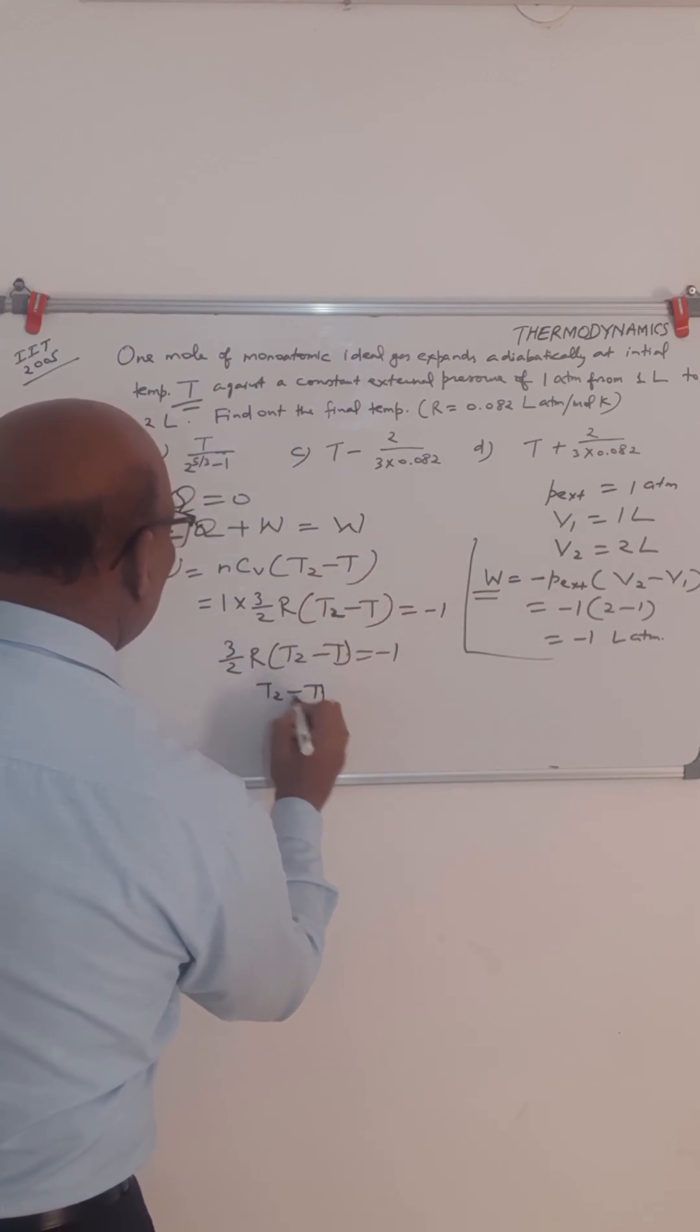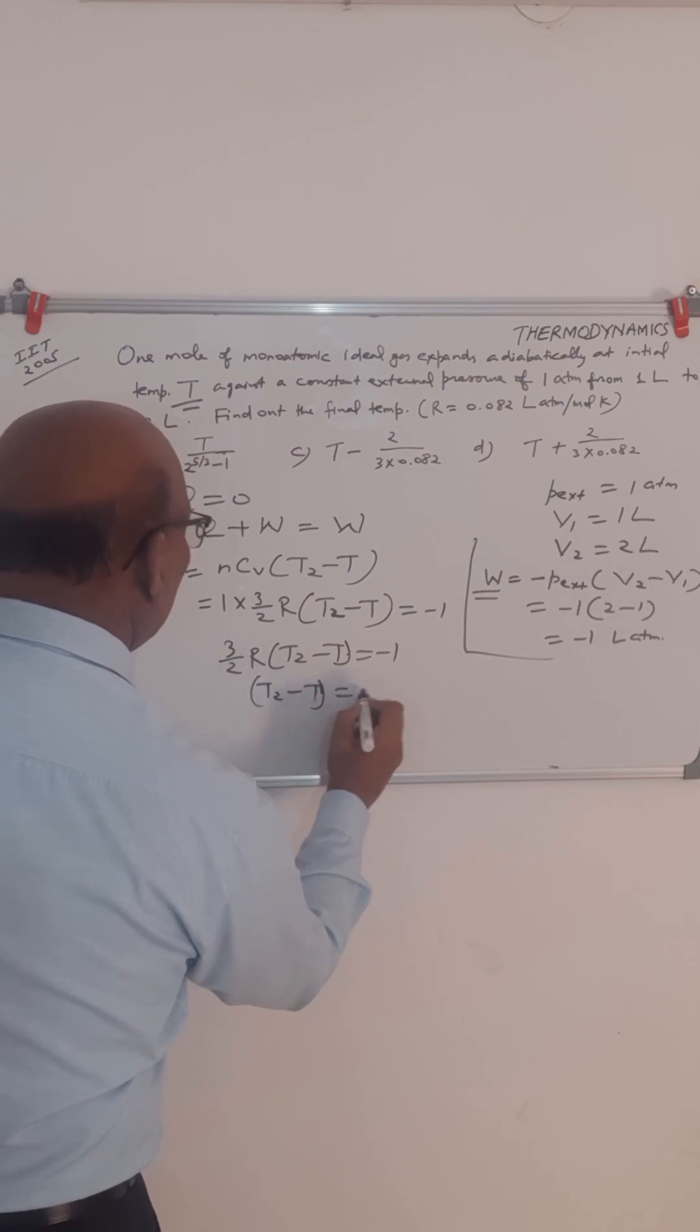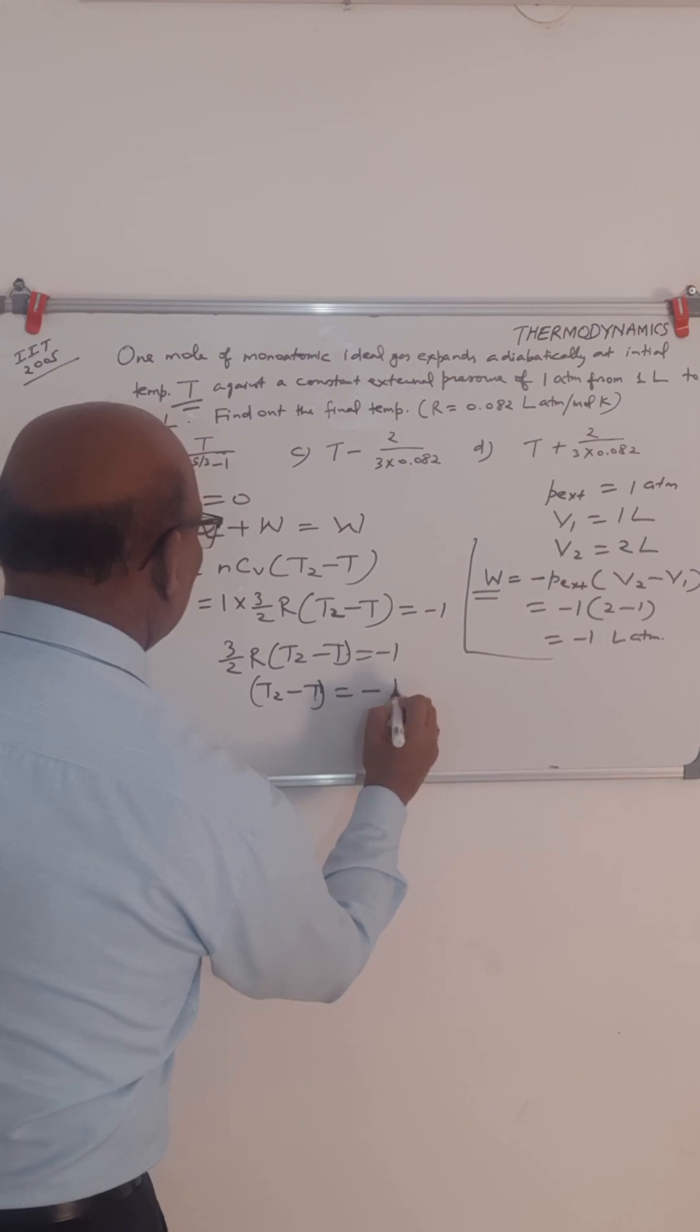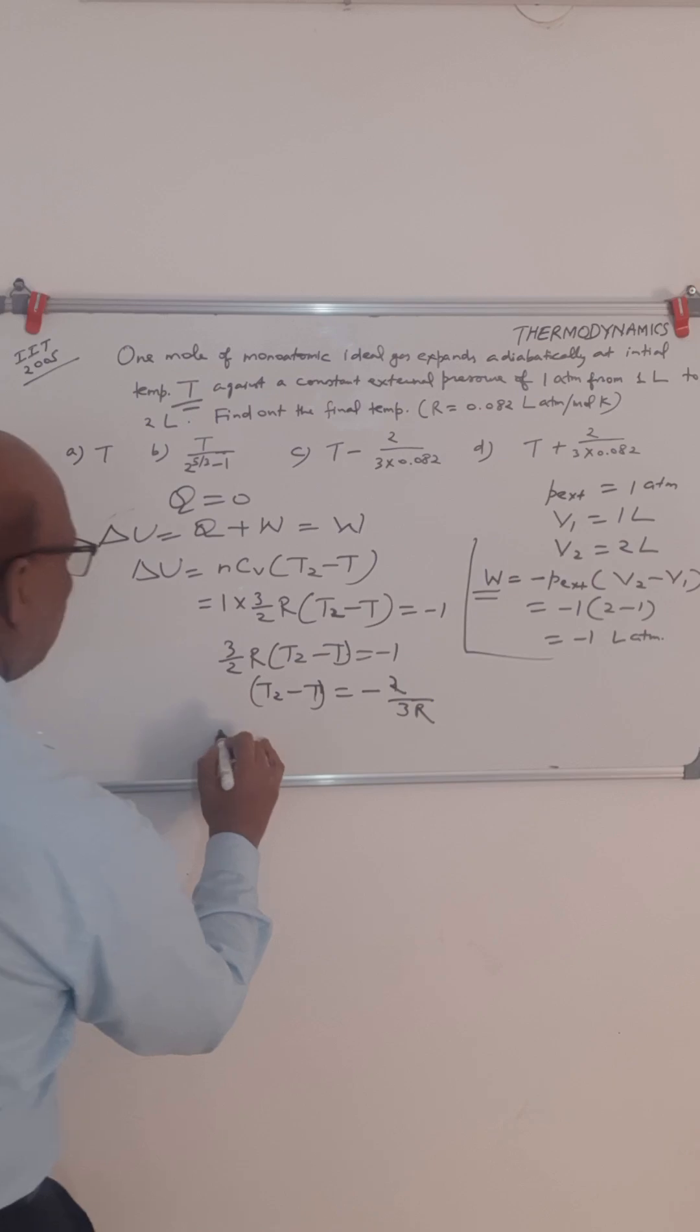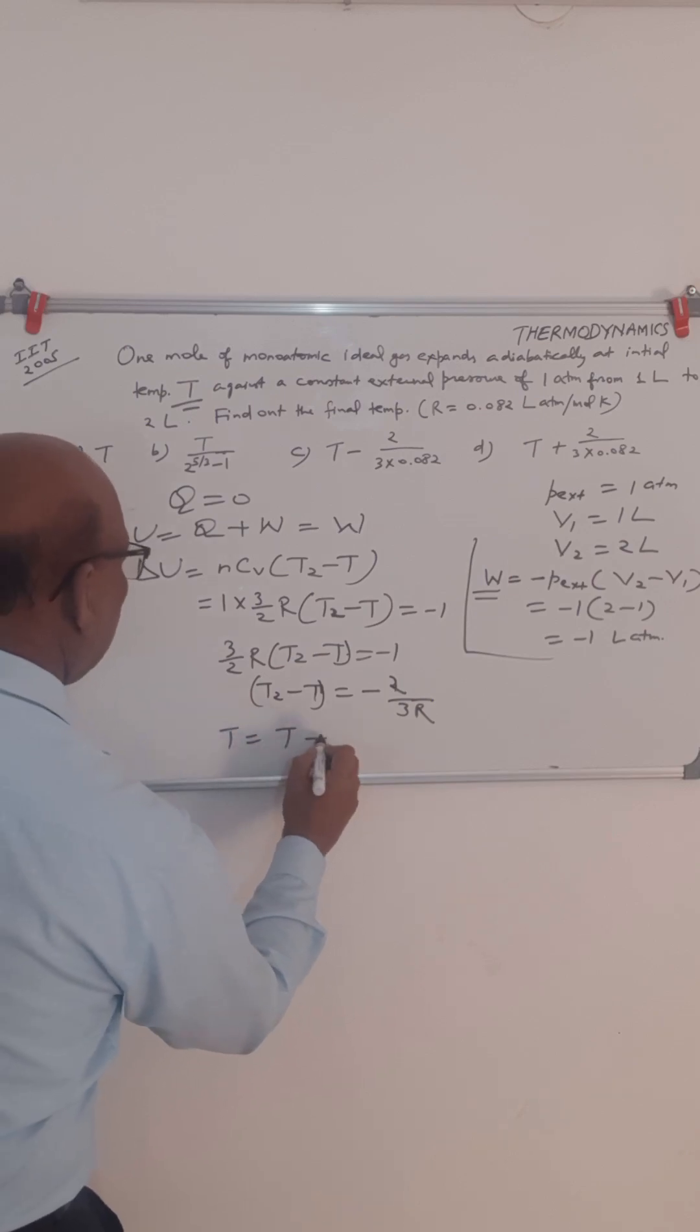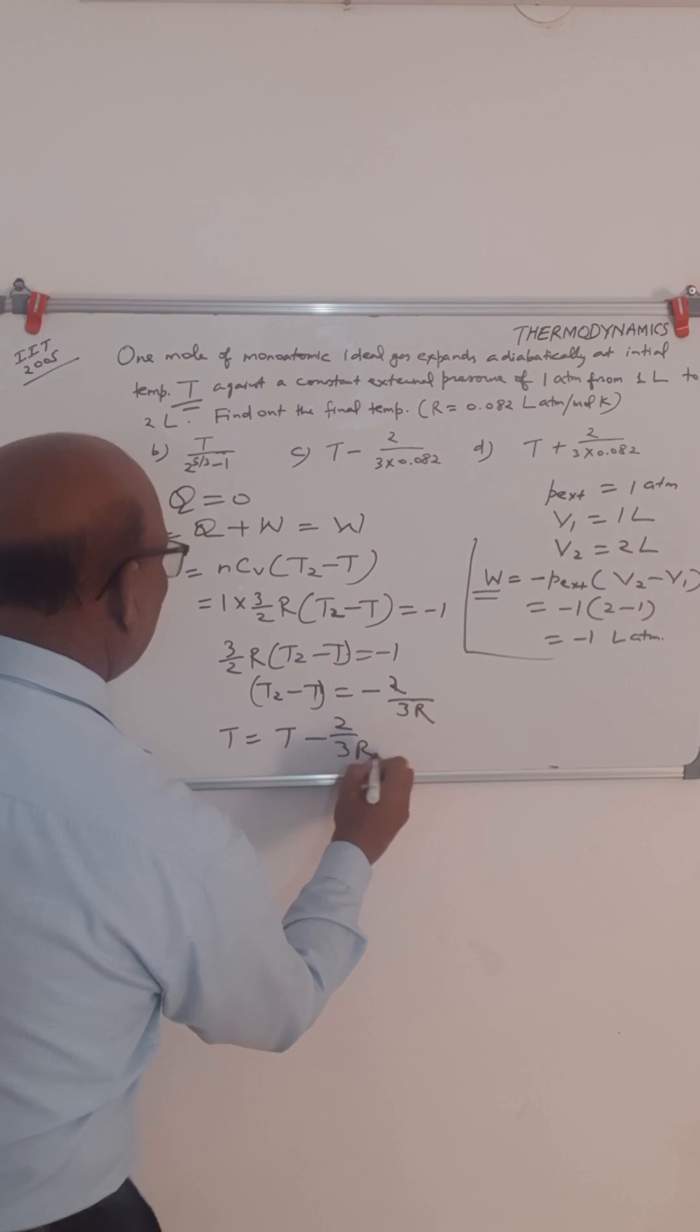So T2 minus T will be equal to minus 1 times 2 divided by 3R. So T2 will be equal to T minus 2 by 3R.